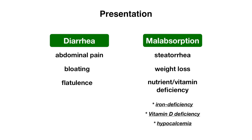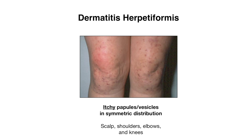Patients can also present with a skin condition known as dermatitis herpetiformis, which is so strongly associated with celiac disease that it's considered a classic symptom. Dermatitis herpetiformis presents as very itchy papules or vesicles in an asymmetric distribution along the scalp, shoulders, elbows, and knees. The name herpetiformis is used because this rash tends to present as blisters that appear in clusters, resembling a herpes infection — though it actually is not.